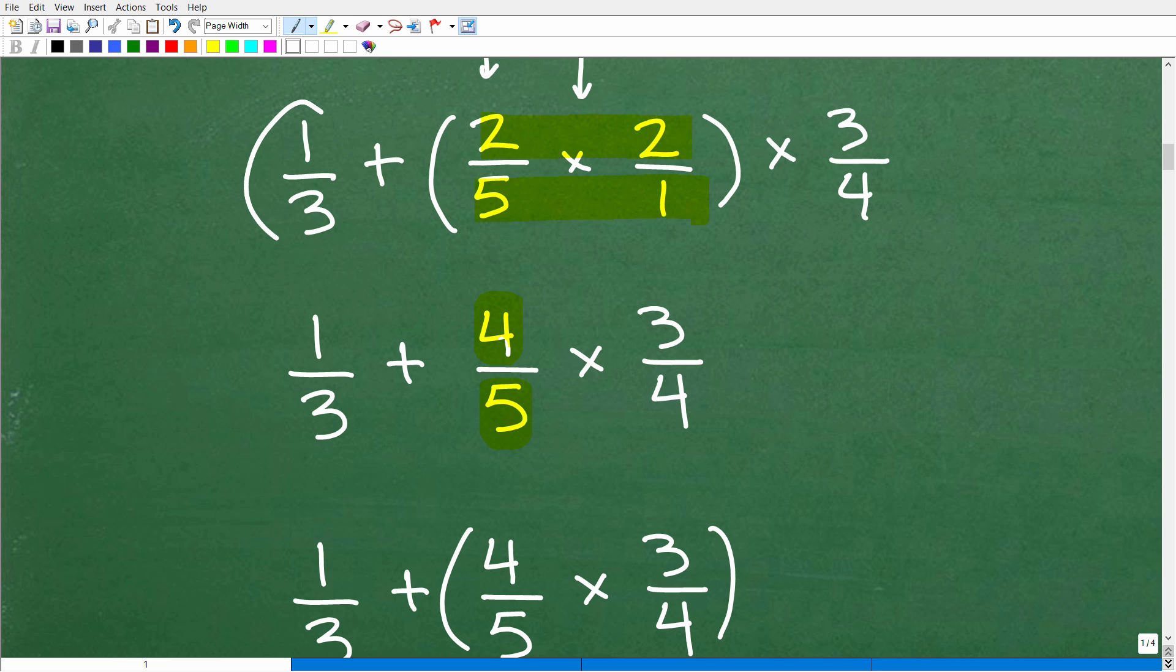So now we have 1/3. There's our 1/3. Here we did this multiplication. That is 4/5. And then we're going to multiply by this 3/4.